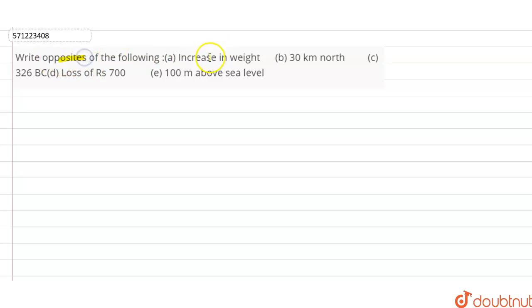Increase in weight, 30 kilometer north, 326 BC, loss of rupees 700, and 100 meter above sea level. So part A: if increase in weight, the opposite of increase in weight is decrease in weight.